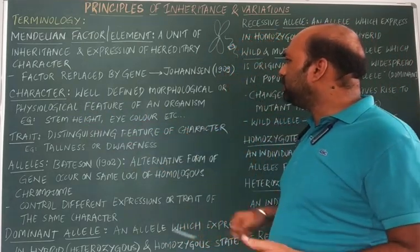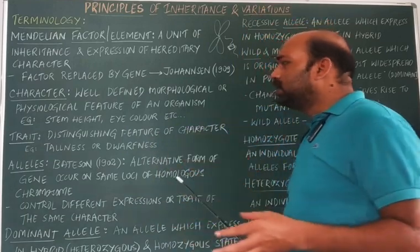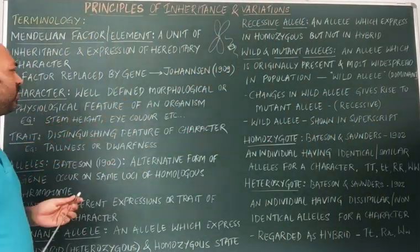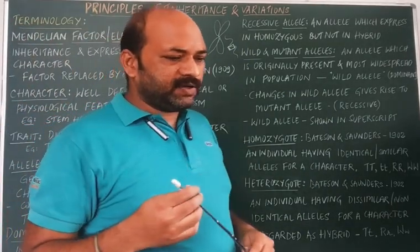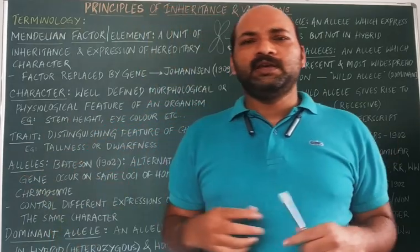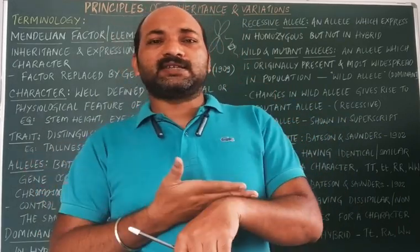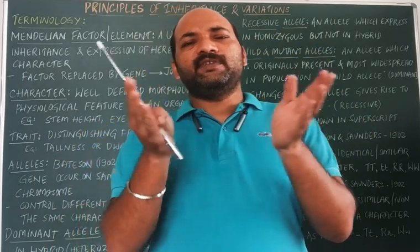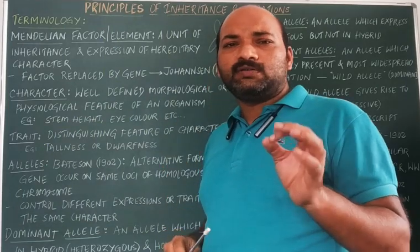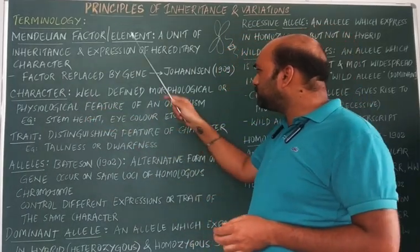A character is regulated by a gene. A character is a well-defined morphological or physiological feature of an organism or individual. For example, height is a character — whether of a plant or an animal. Eye color and hair pattern are also examples of characters. These are morphological or physiological features seen in an individual, and each character is regulated by a gene.